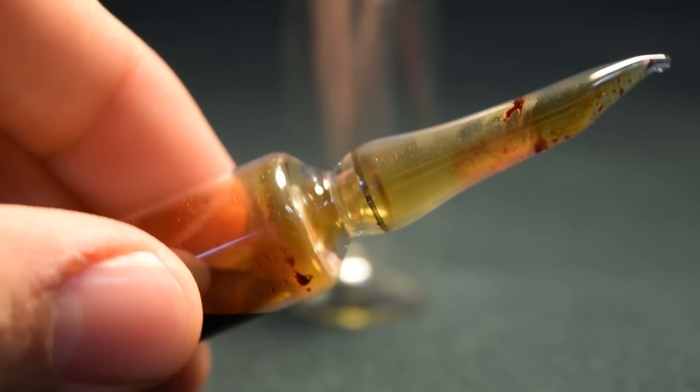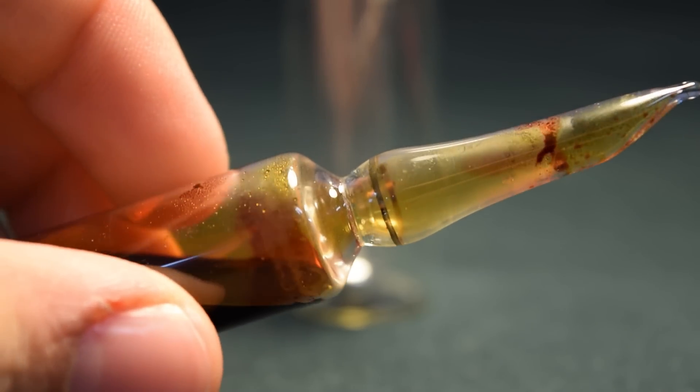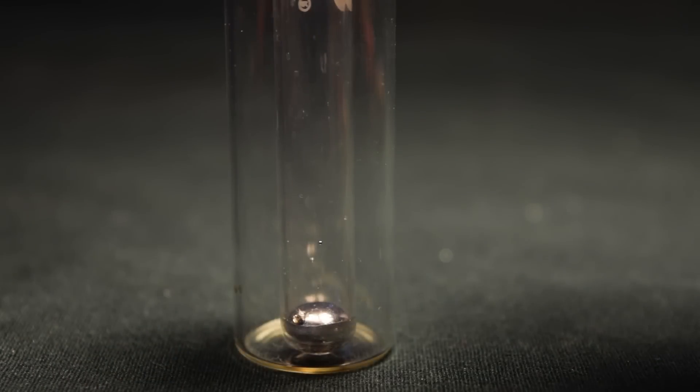Now it's time to open up the bromine ampule. This ampule has been pre-scored, so it's pretty easy to just break off the top. I'm using a glass pipette to put in a few milliliters of bromine over top of the mercury.